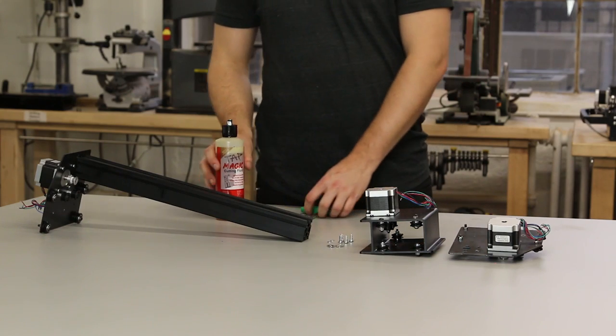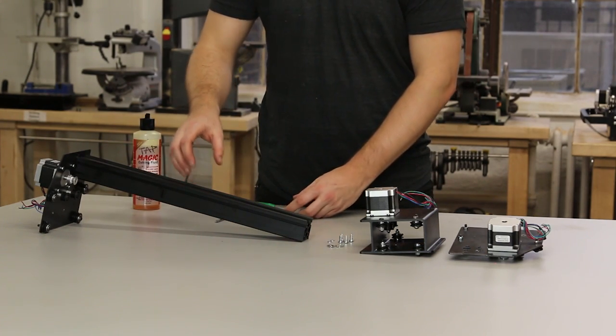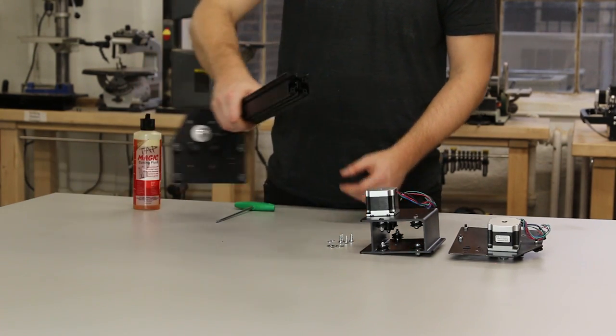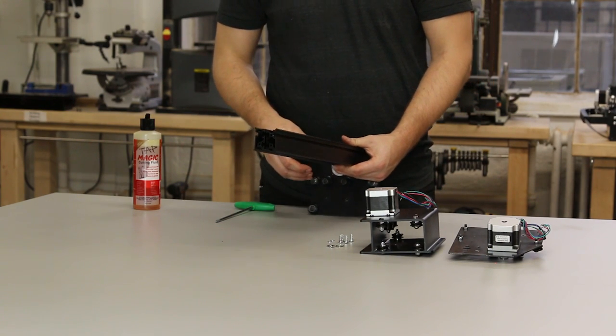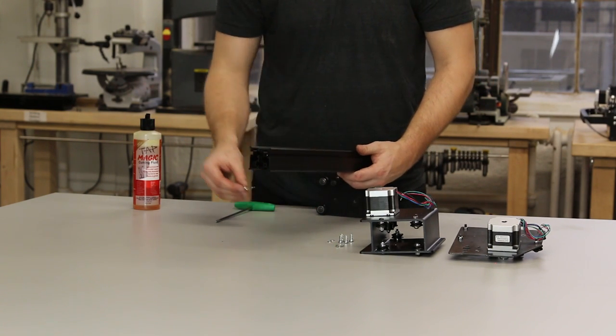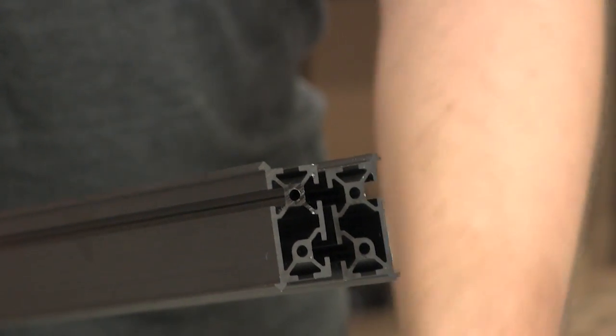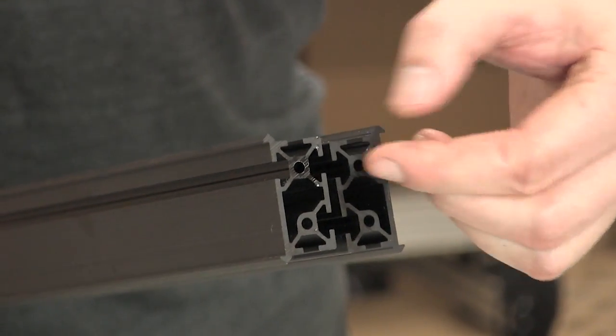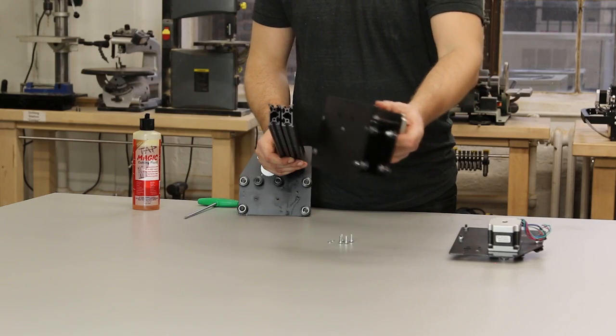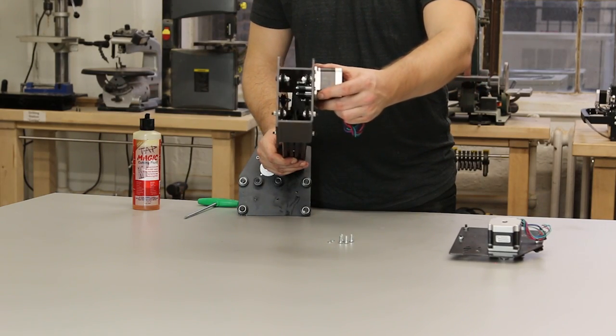Now we're going to slide the X carriage onto the X-axis that we just built. Here's a good shot of the rails of the maker slide facing away from each other. You can see that I put the insertion nuts on the piece of maker slide that corresponds to the X-axis motor.